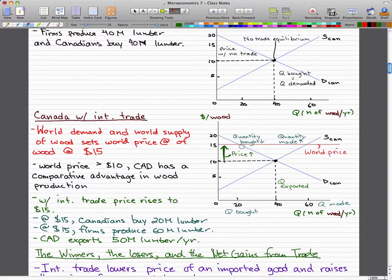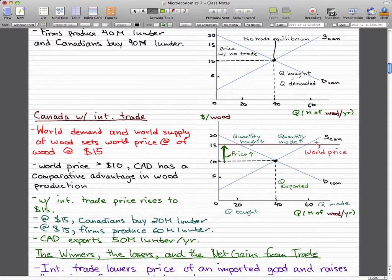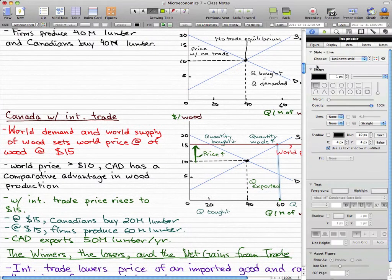Now, at $15, the firms will actually start producing more. So they'll produce 60 million pieces of lumber, and I'm just going to make this a dotted line.